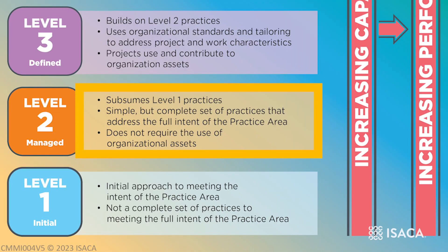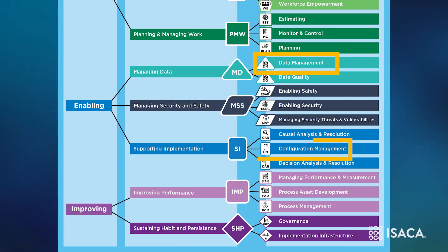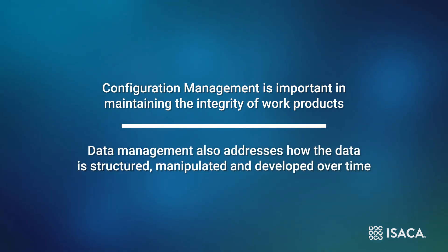The Level 2 practices build upon this initial position. Practice DM 2.1 is important in introducing a data management approach. Essentially, this is seeking to develop processes and plans for conducting the data management activities. Notice in the additional explanatory information that it is recommended to review the data management approach against configuration management activities, plans, and processes. While data management and configuration management are related to each other, they are also distinct and both plans are needed. While configuration management is important in maintaining the integrity of work products, data management also addresses how the data is structured, manipulated, and developed over time. Organizations gain synergies by looking at configuration management and data management business needs together, such as requirements for tools and reporting.